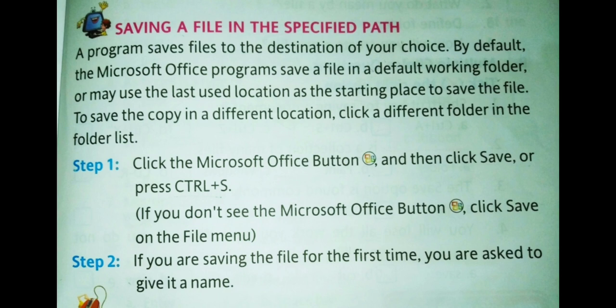You can save the file in MS Office. If you want to save the file, you can change the location. Step 1: click the Microsoft Office button and then click Save, or press Ctrl+S. If you don't see the Microsoft Office button, click Save on the File menu.